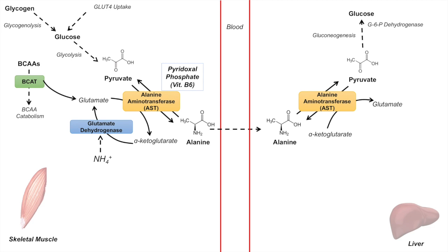The skeletal muscle does not have this enzyme, and that's why it does not participate in gluconeogenesis. Once glucose has been produced in the hepatocyte, it is transported out into the blood, and the skeletal muscle can pick up that glucose through a GLUT4 transporter.